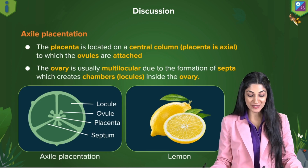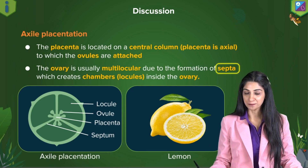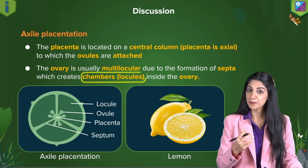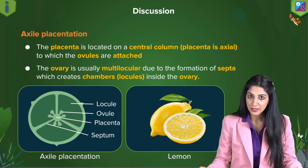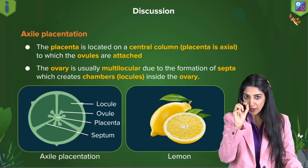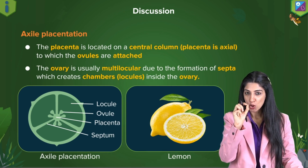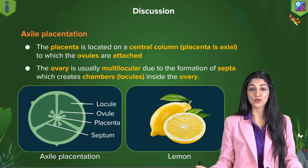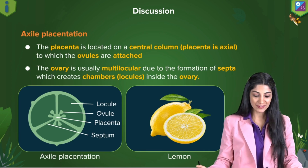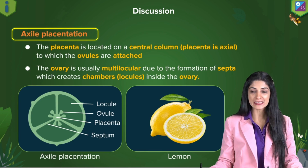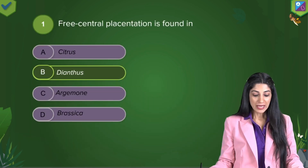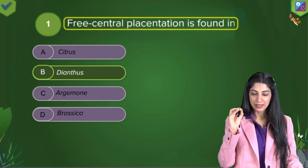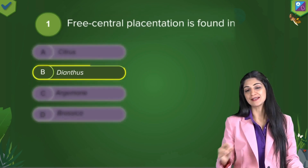Next, we move on to axile placentation. This ovary has septa dividing it into multiple chambers — a multilocular ovary. The central axis where the septa meet together is where the ovules are born. This is axile placentation, seen in lemon. So in the given question, free central placentation gives the answer as Dianthus.